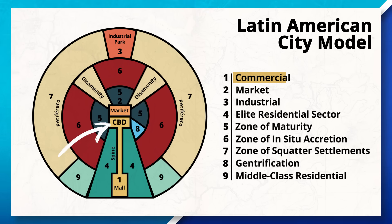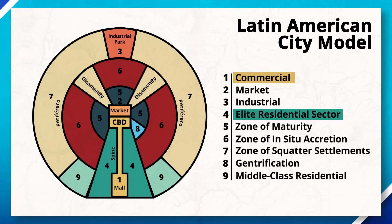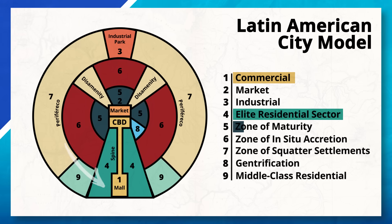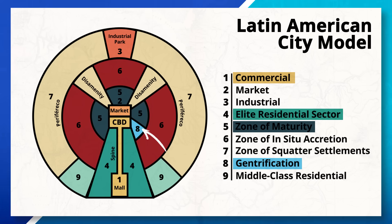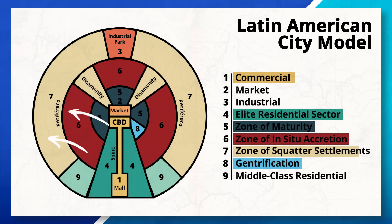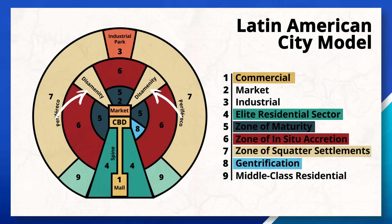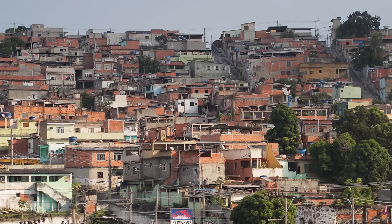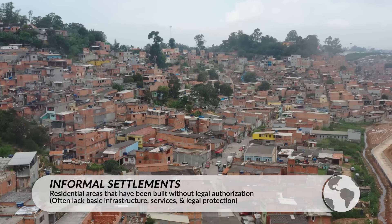When looking at the Latin American model, the central business district is still located at the center. However, there is a spine extending outwards from the CBD, which consists of wealthier residents and high-end commercial activity, often connecting to a commercial sector or mall. Right outside of the CBD, we can see the zone of maturity, which consists of older homes and buildings and some neighborhoods that may have experienced gentrification. In the peripheral or outer areas of the city, we can see both middle and low-income housing with less access to services. Lastly, we have the disamenity zone, which consists of residents living in extreme poverty, sometimes lacking basic infrastructure like water, power, or sewage access. We can also see informal settlements, also known as squatter settlements or favelas, forming on the outside of the model.